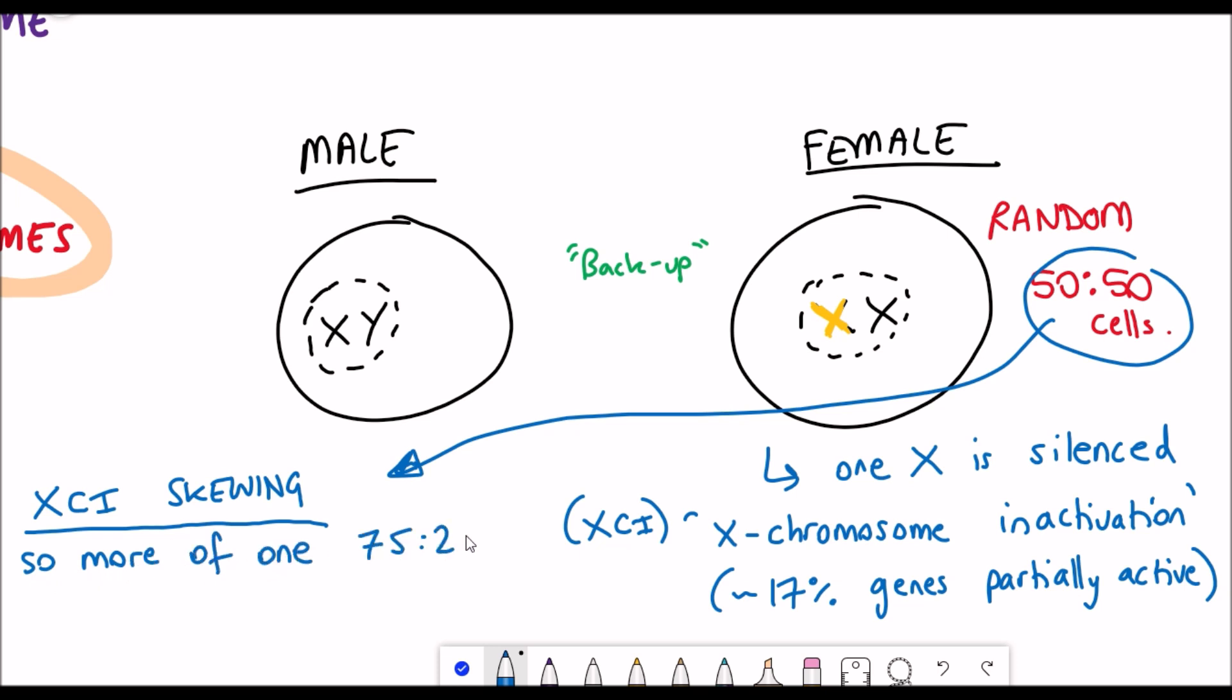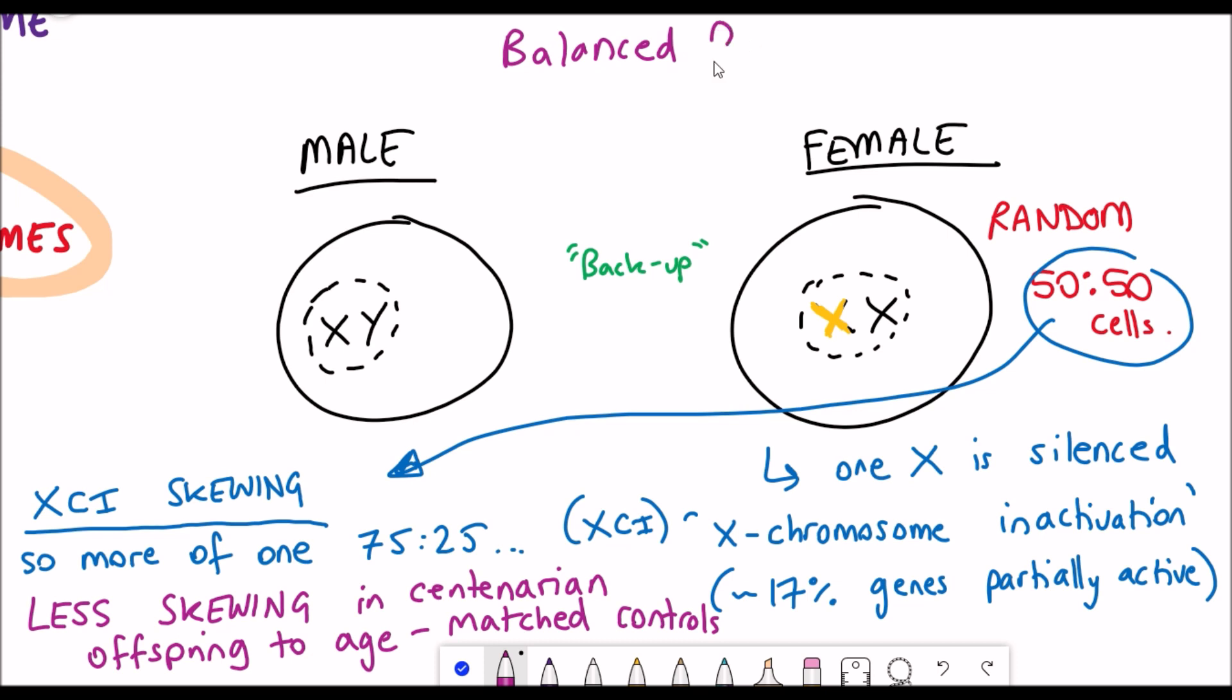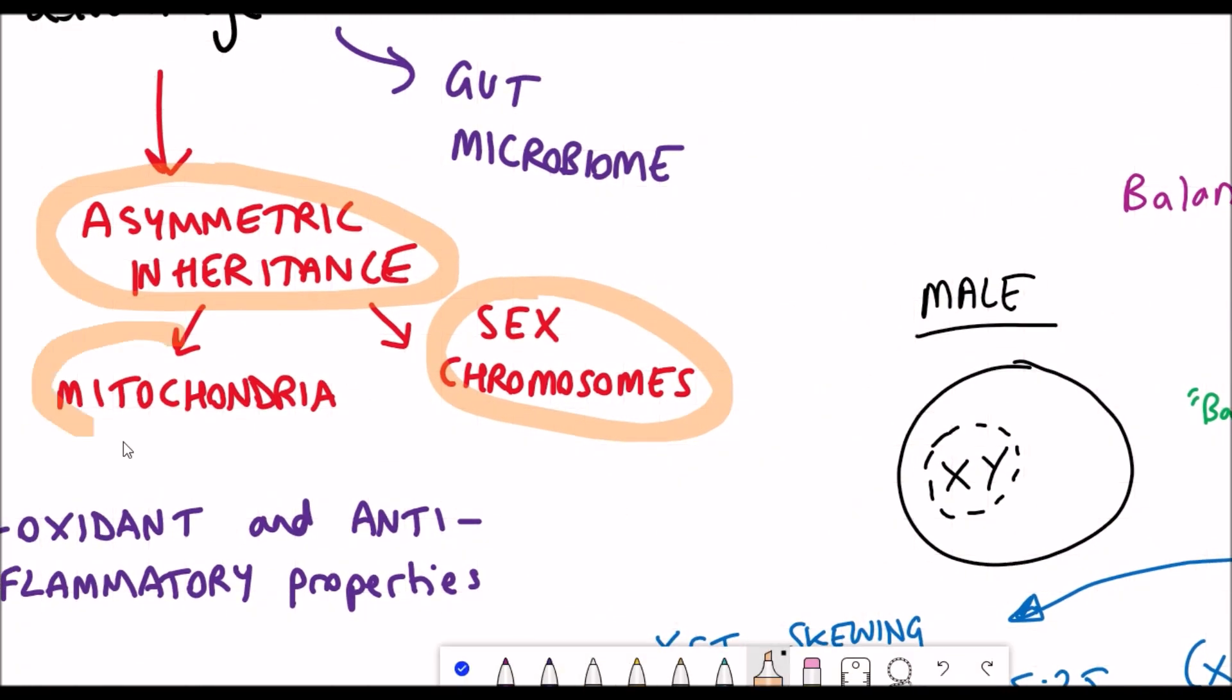But even more interestingly, studies have looked at which chromosome has been inactivated, and this ratio seems to get skewed as you age. So whilst that might be because one X is better than the other and it could be an advantage, the studies have shown that actually centenarians tend to maintain their ratio of 50/50. So having this capability of having both chromosomes seems to be the fittest strategy. So besides the inheritance of sex chromosomes.